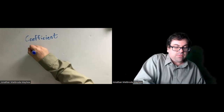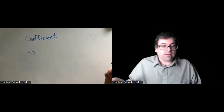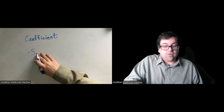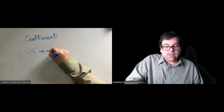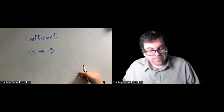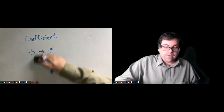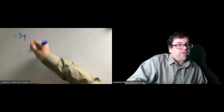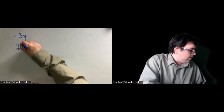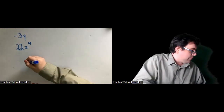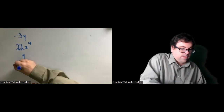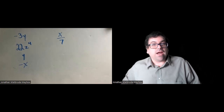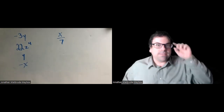And what if we just had the term negative 5? Well, we can imagine that we have some variable here that we can't see. So the coefficient is just negative 5 itself. So you try a few — find the coefficients of these. Go ahead and pause, unpause when you're done.